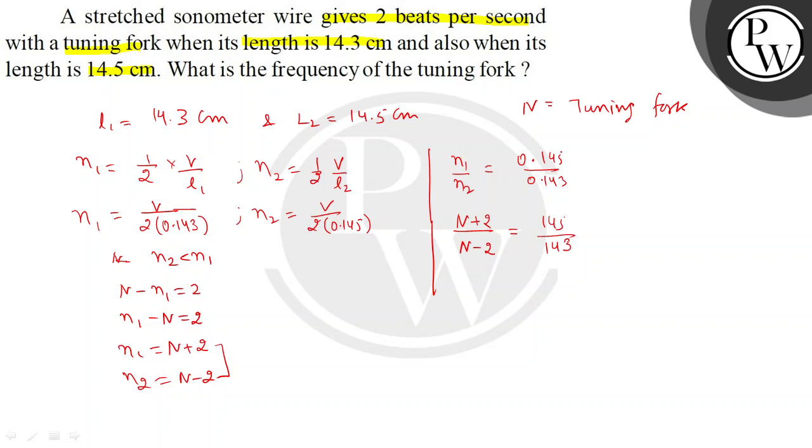Cross multiplying, 143(N+2) = 145(N-2), which gives 143N + 286 = 145N - 290.